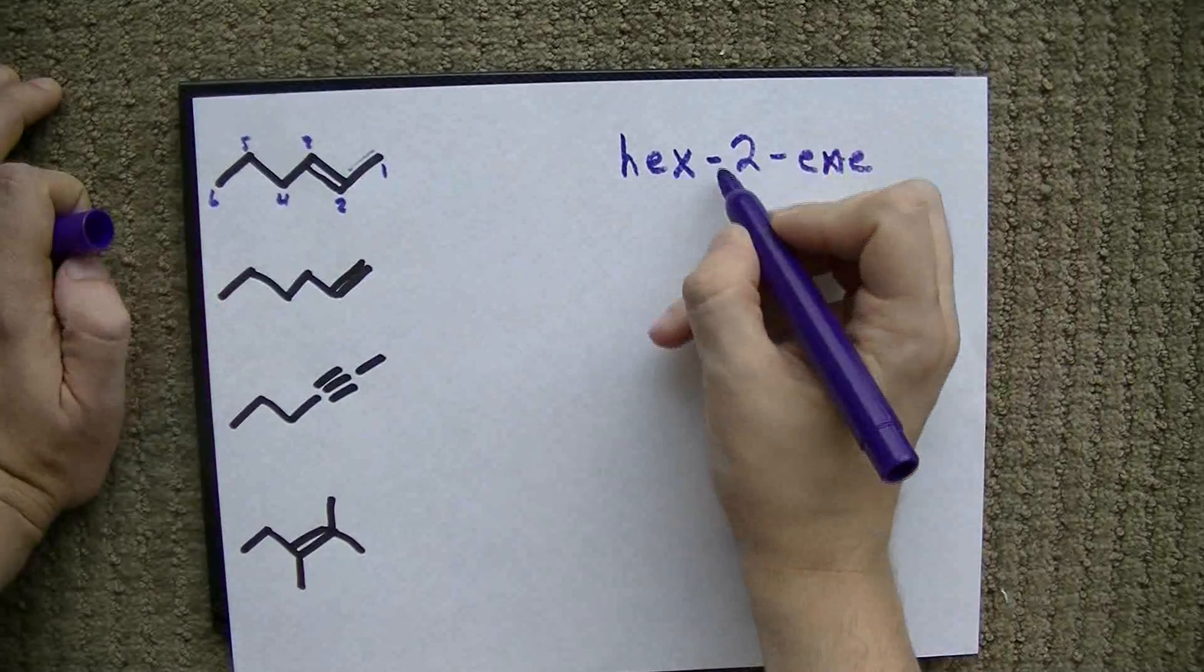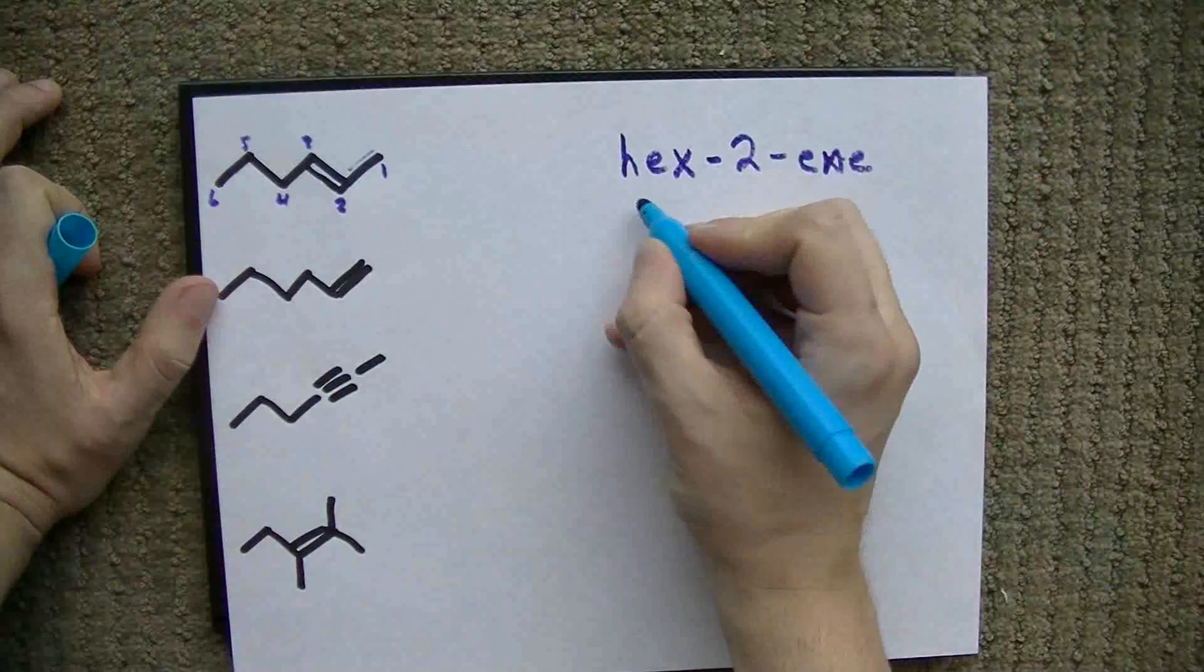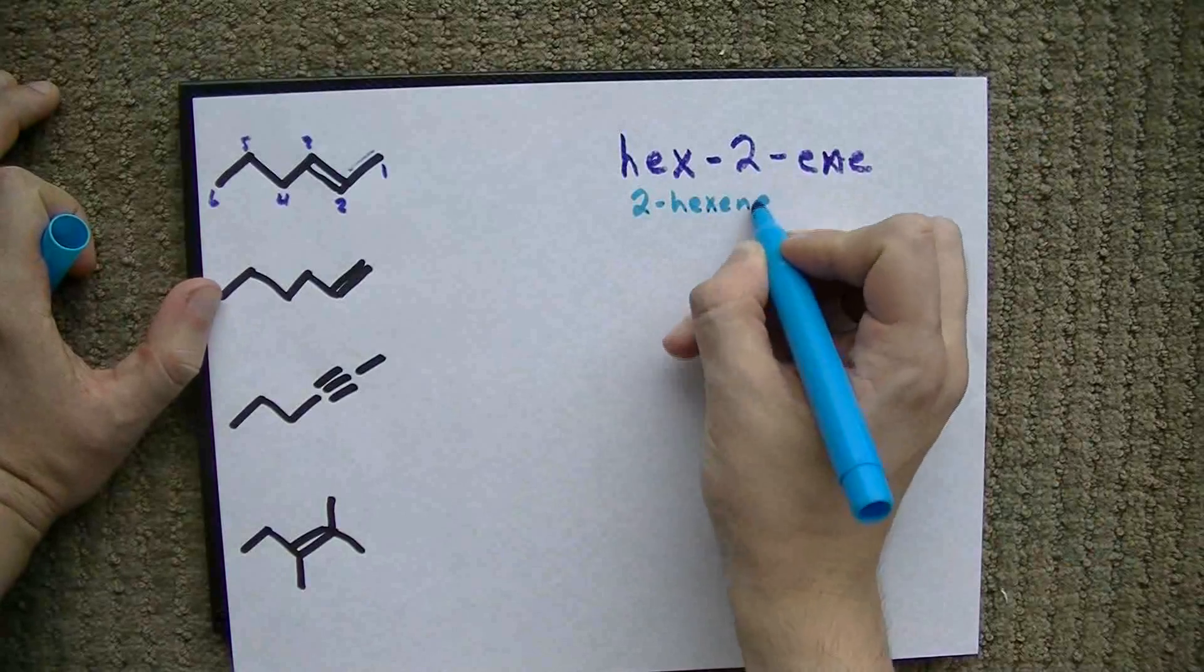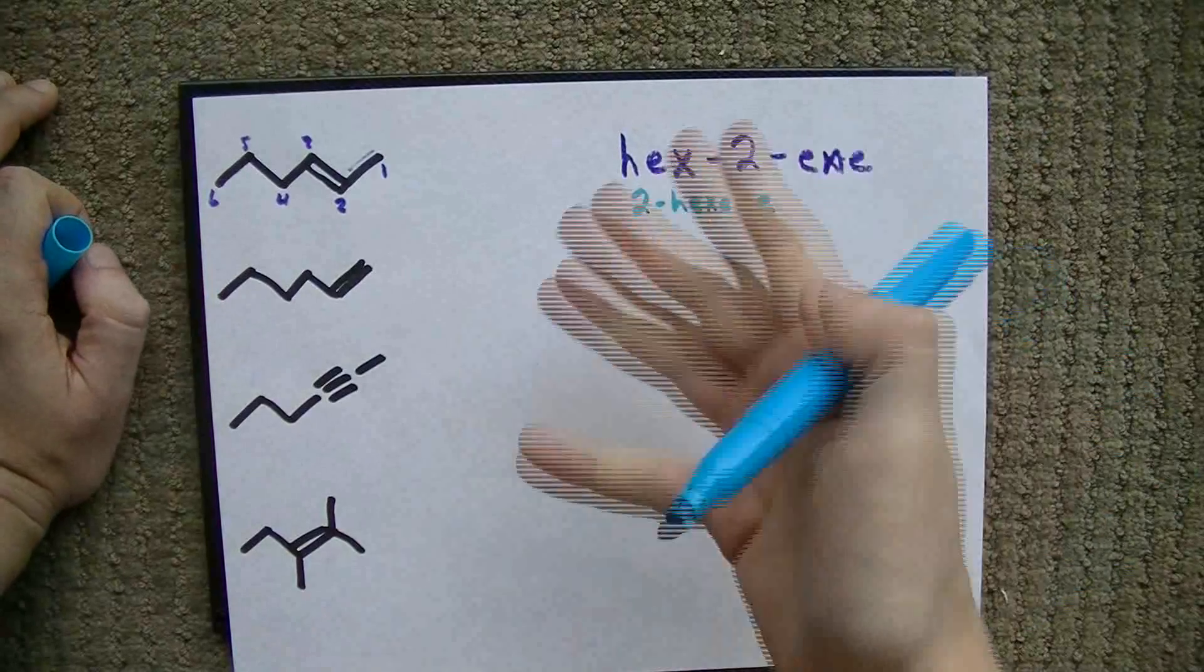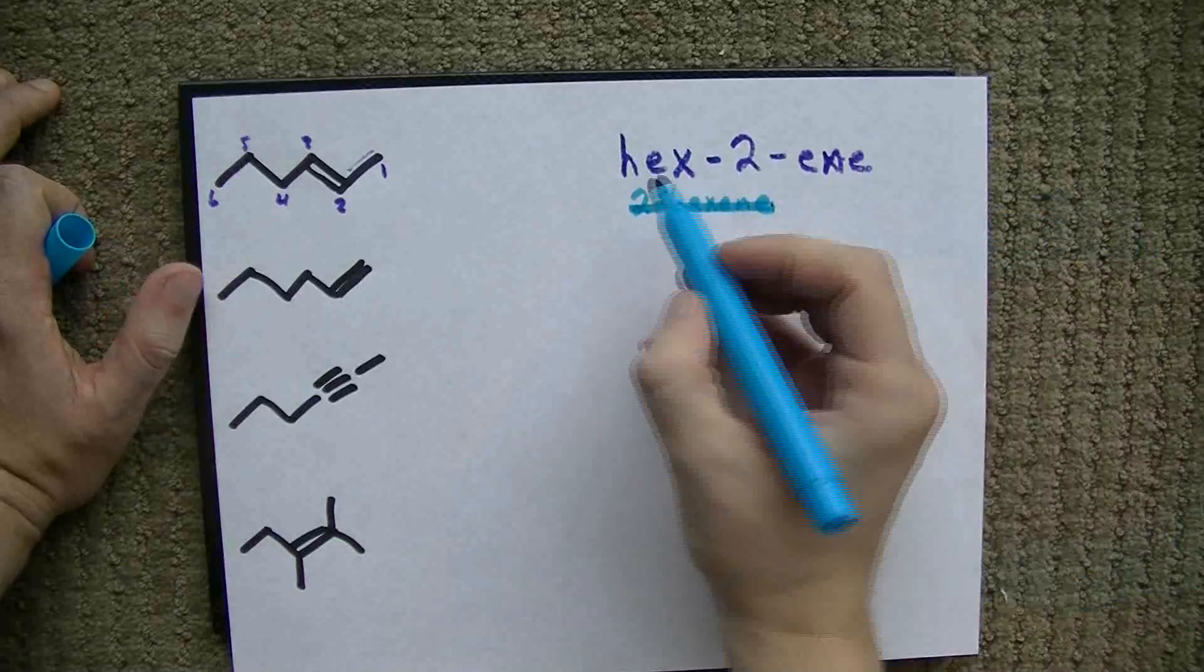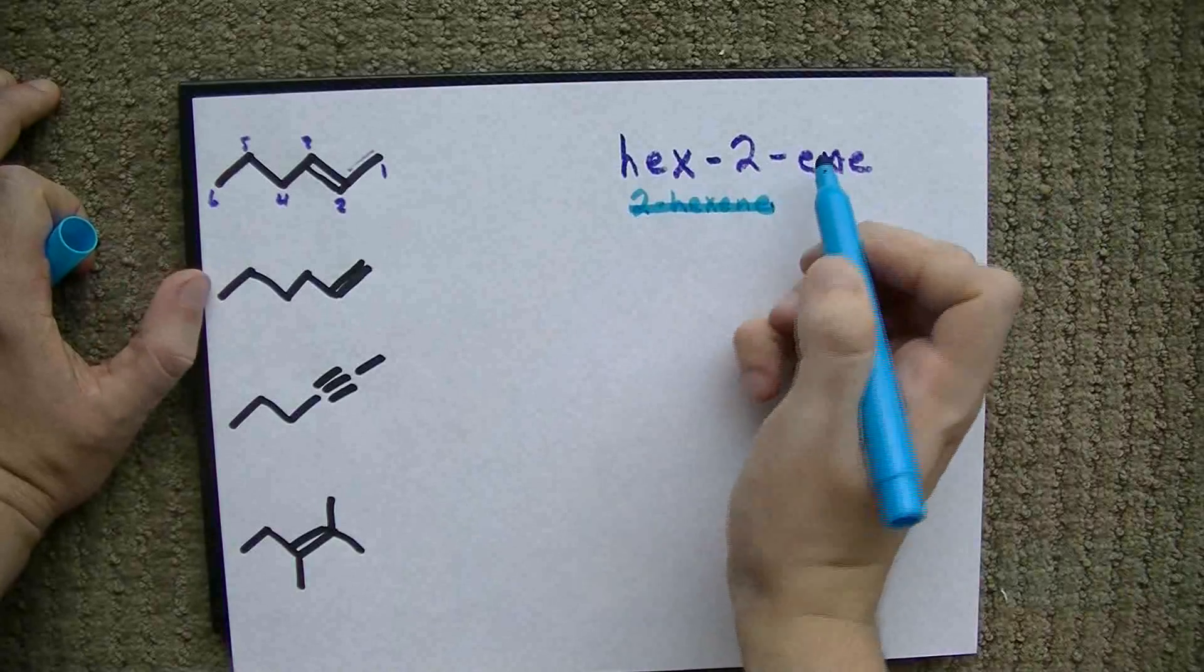That's H-E-X-2-E-N-E. Now, some teachers who are using an outdated naming system might call it 2-hexene, but the I-U-P-A-C, the group of Swedish people who control how we name things, we don't use that anymore. We put the two in front of the ene to show that's where the double bond is.